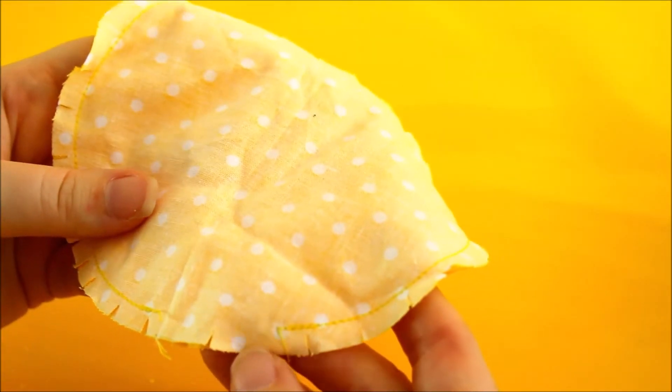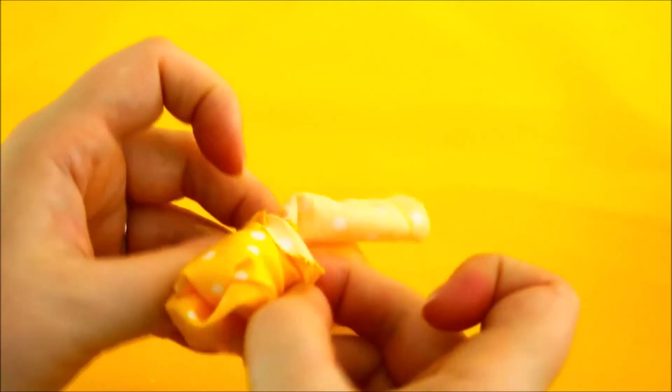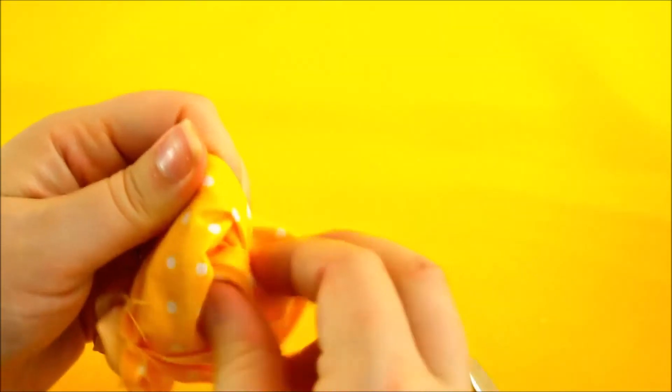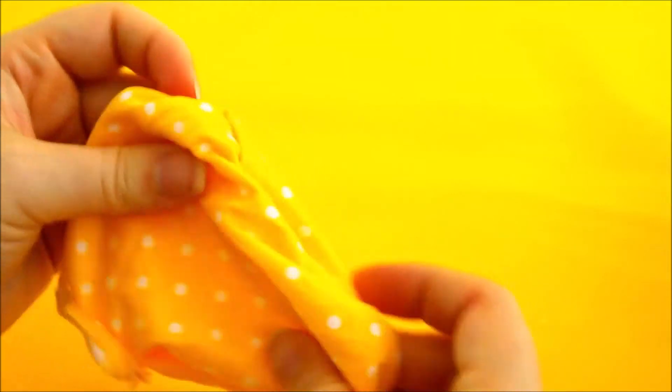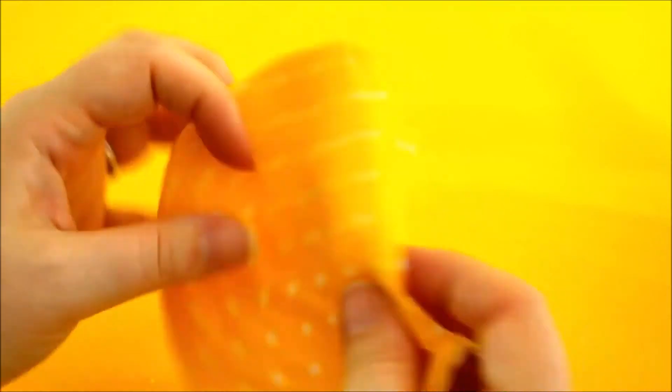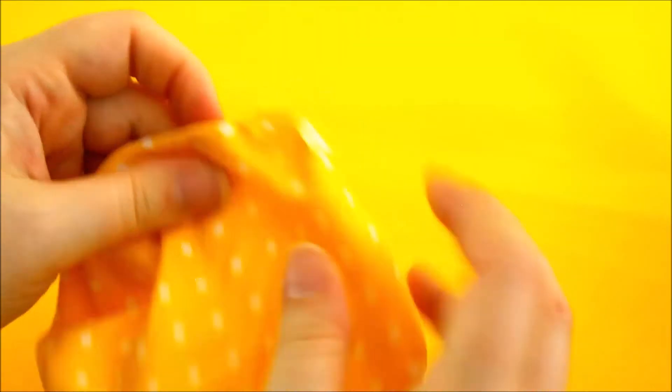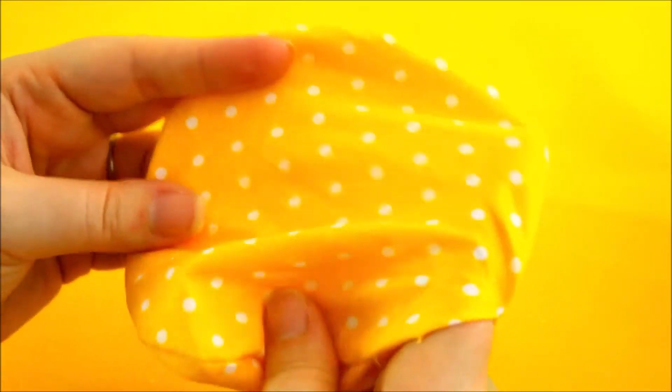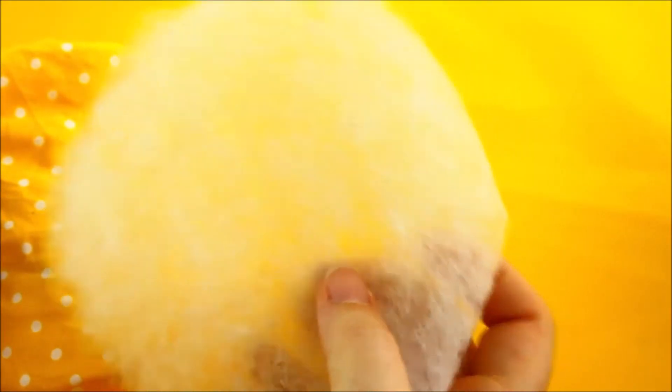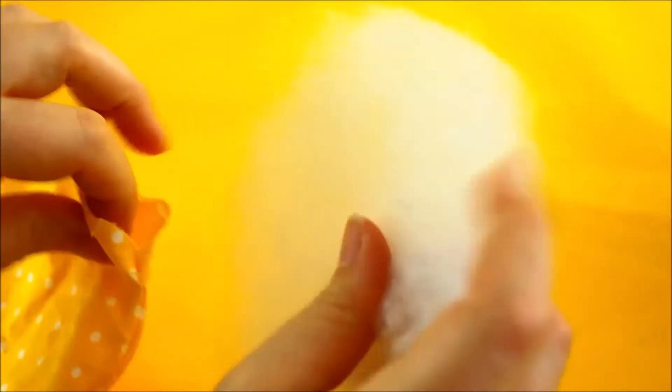And then we're going to turn it through that hole. Then I'm just going to take a little piece of two ounce wadding and I'm just going to pop that inside through that gap there.